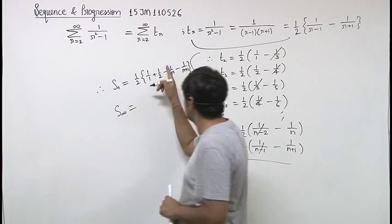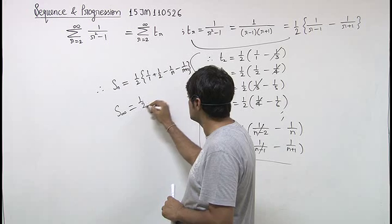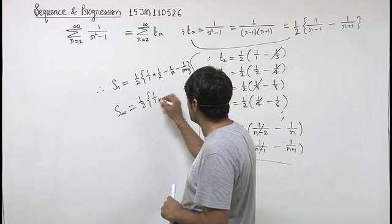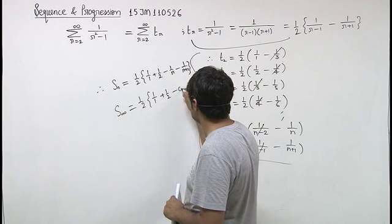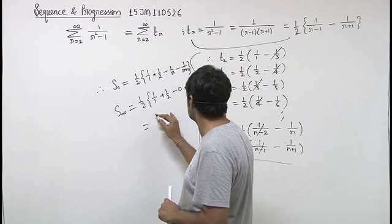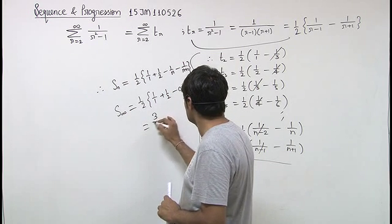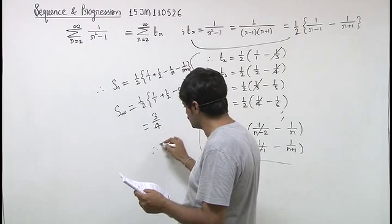Sum of infinite terms, 1 upon infinity will be 0. That is 1 upon 2 times 1 upon 1 plus 1 upon 2 minus 0 minus 0. So this is equal to 3 by 4, that means the correct answer is B.